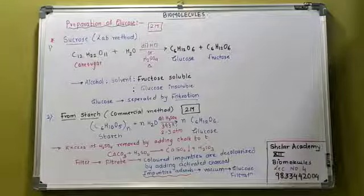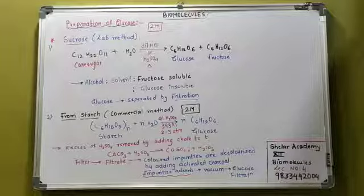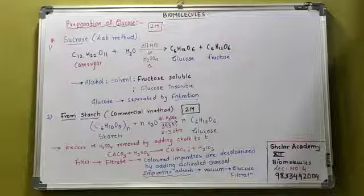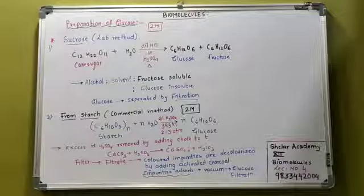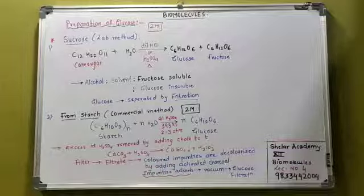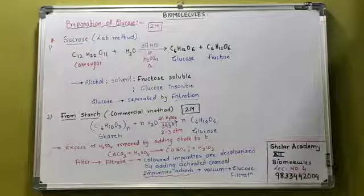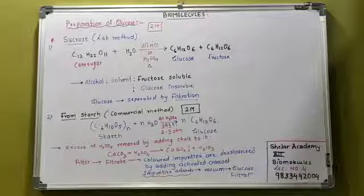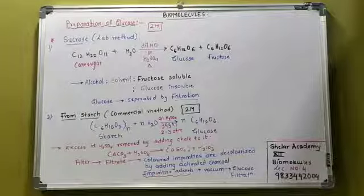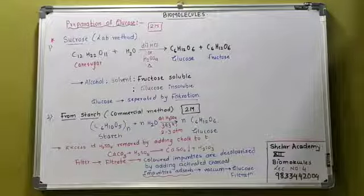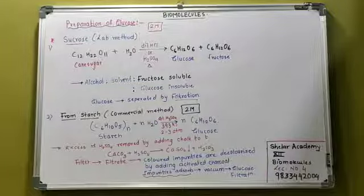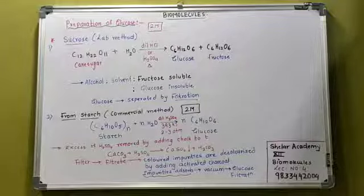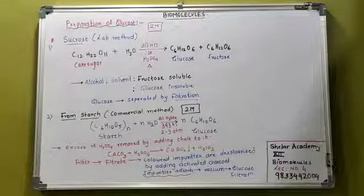As it is more soluble, it will go with alcohol. And glucose is insoluble. So if we filter it, we will get glucose. See, if you want two marks, then explanation one mark, entire correct explanation till glucose is filtered, and reaction along with the conditions, that will be for one mark. So this is how the two marks are distributed when it is a lab method by which you can prepare glucose.